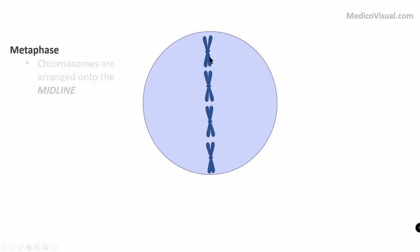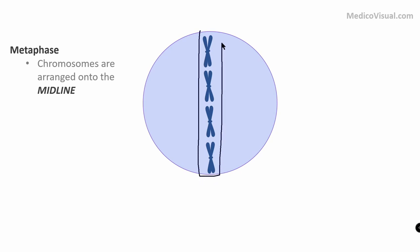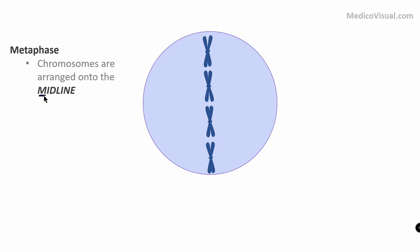In the next phase, chromosomes are arranged on the midline — onto the equator — forming a plate-like structure called the mitotic metaphase plate. This phase in which chromosomes are arranged on the midline is called metaphase. M for midline — M for metaphase. Easy.